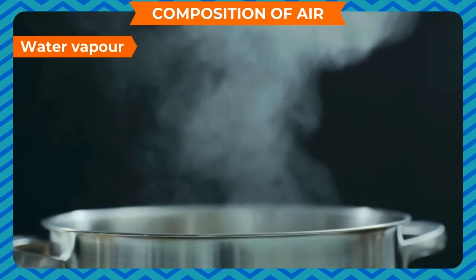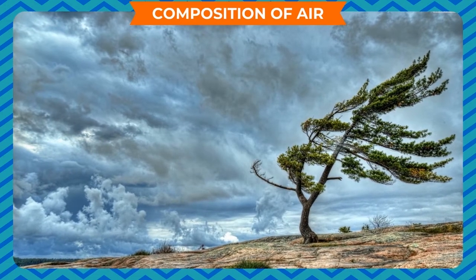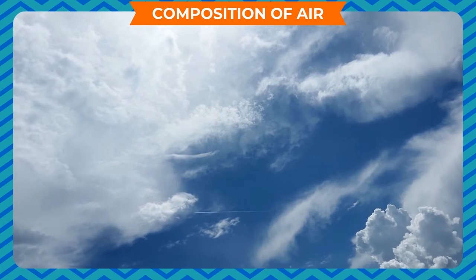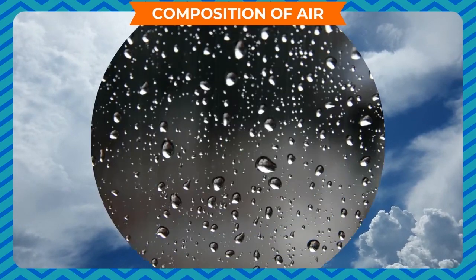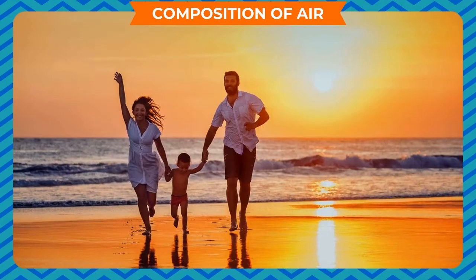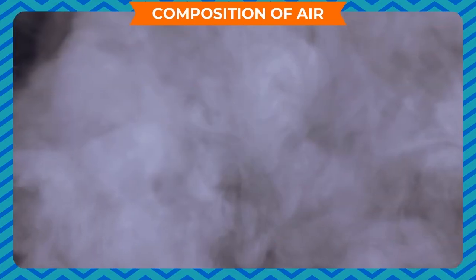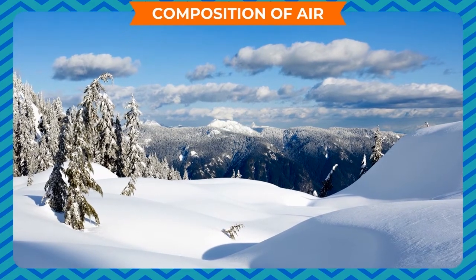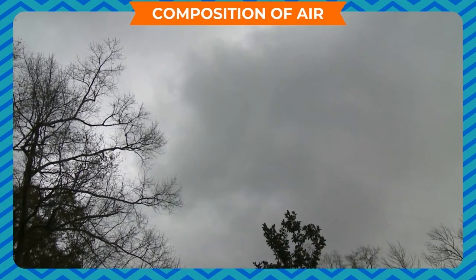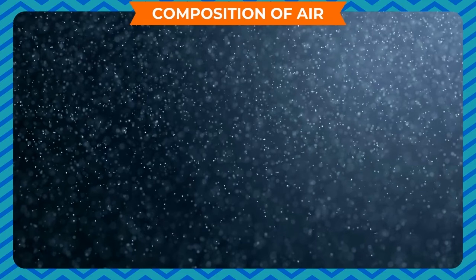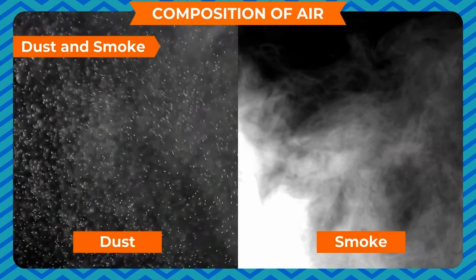Water vapor: air in the atmosphere is not dry — a small amount of water vapor is present in it. When air comes in contact with a cool surface, it condenses into drops of water that appear on the cooled surface. In summer, the amount of water vapor in the air is more, while in winter this water vapor condenses due to low atmospheric temperature. The condensed water sits on dust particles and appears as fog.